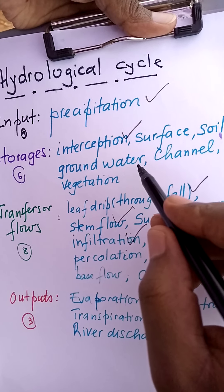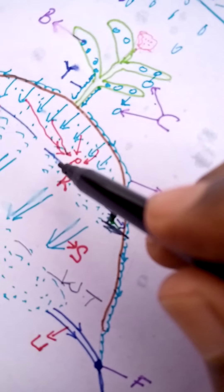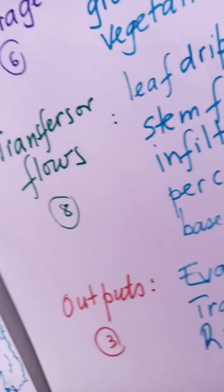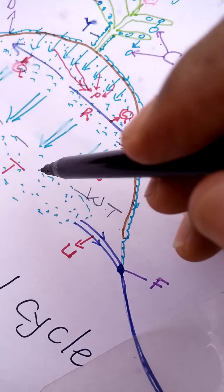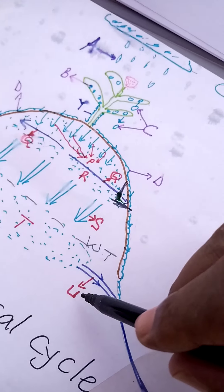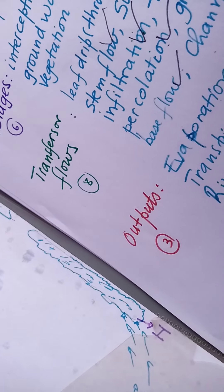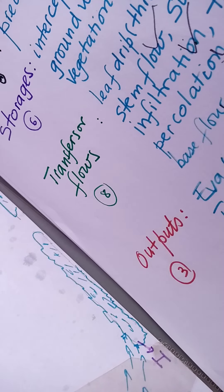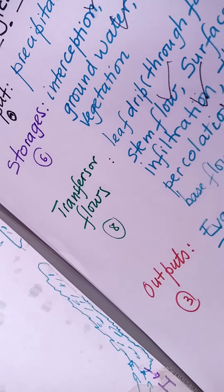We have seen groundwater, which comes after percolation. Percolation comes after soil moisture. Percolation, labeled S on the diagram, supplies groundwater, labeled T. Groundwater flow — also called base flow — is when groundwater moves sideways to produce rivers. We have seen channel flow in a small stream, and you will also see it on a big river. Channel storage is the water held in the river channel.